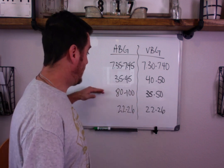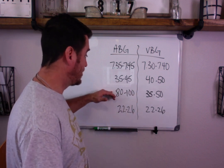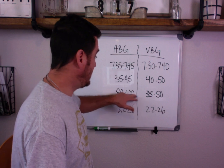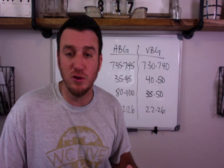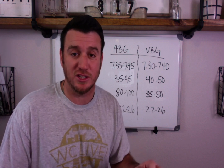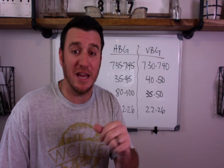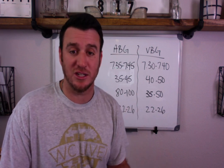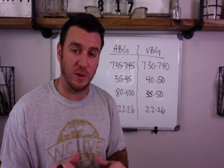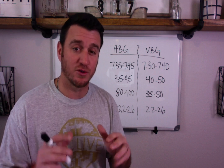Now when we talk about PaO2 or oxygen, normal ABG is 80 to 100, VBG 35 to 50. You cannot use a venous blood gas to assess oxygenation. You cannot. Say it again. You cannot use a venous blood gas to assess oxygenation. There is no correlation between the two.